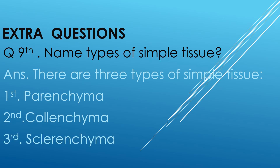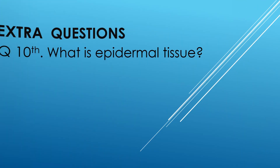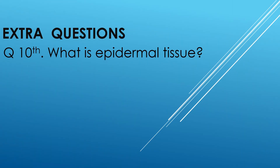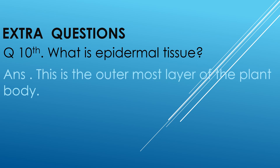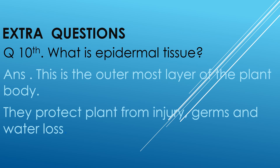Let's discuss question 10. What is epidermal tissue? The answer is: epidermal tissue is the outermost layer of the body. It protects plants from injury, germs and water loss.